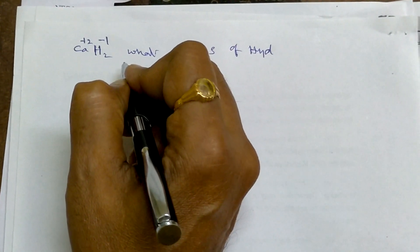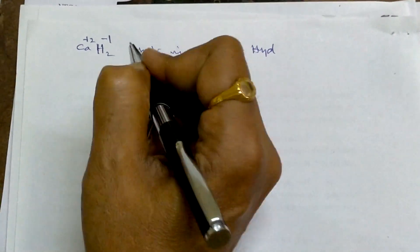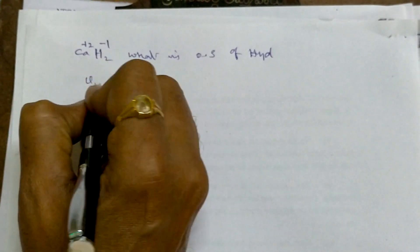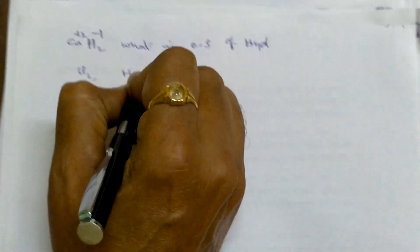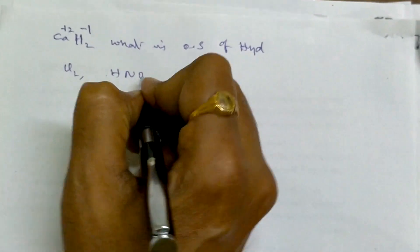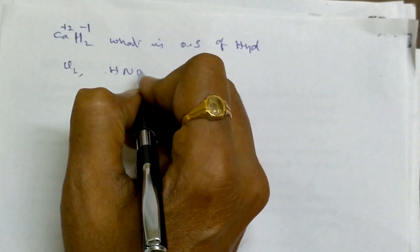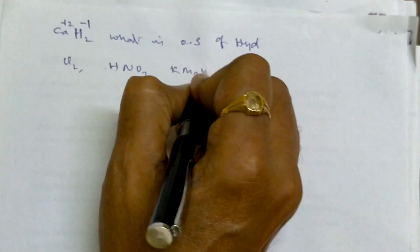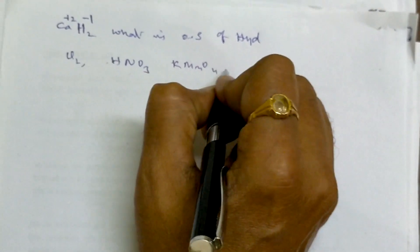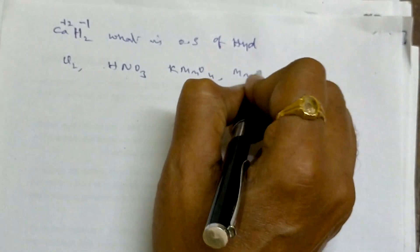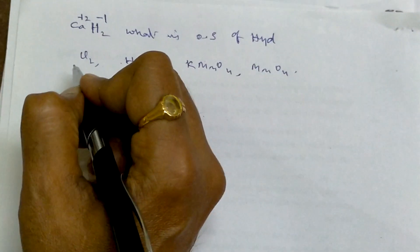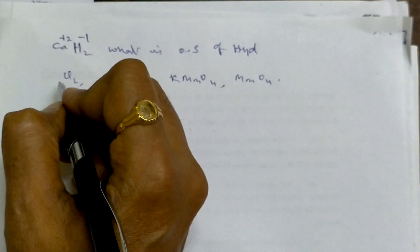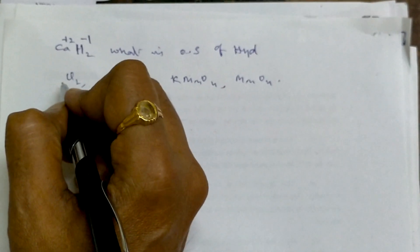Number 2: which of the following is not an oxidant? The answer choices are chlorine, HNO₃, KMnO₄, and MnSO₄. Try this one. Now some redox reactions are there — what is the oxidizing agent?